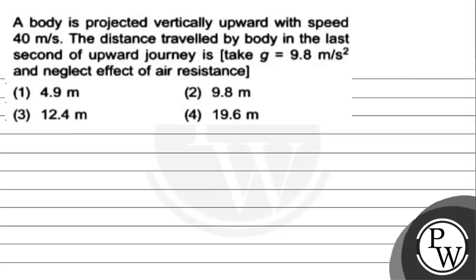The question says that a body is projected vertically upward with a speed of 40 meters per second. The distance travelled by the body in the last second of upward journey — take g equals 9.8 meters per second squared. Don't forget the effect of air resistance. The options are: 4.9 meter, 9.8 meter, 12.4 meter, and 19.6 meter.